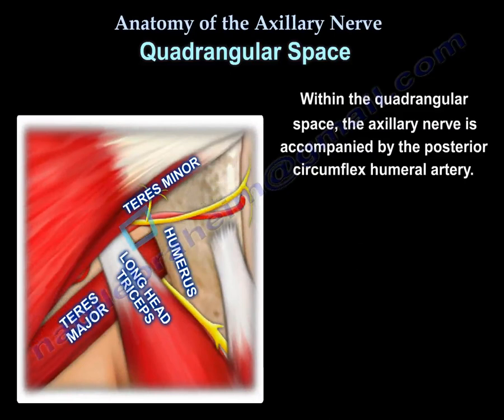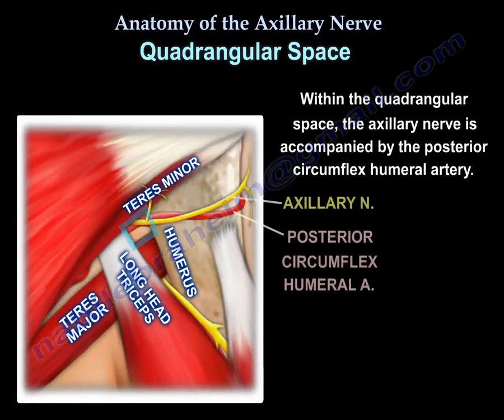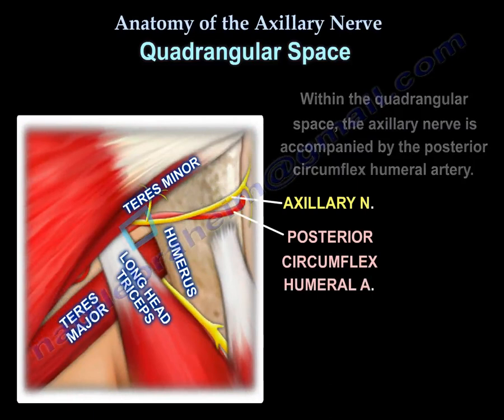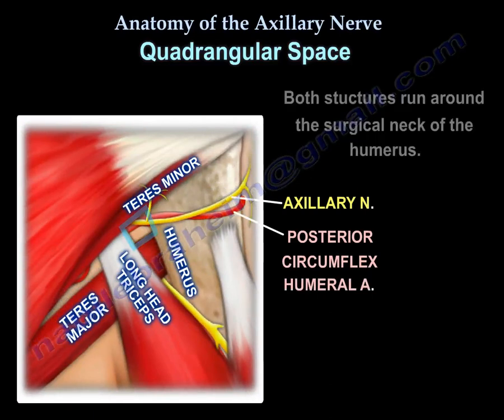In the quadrangular space, the nerve is accompanied by the posterior circumflex humeral artery. They run around the surgical neck of the humerus.